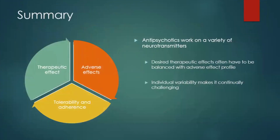To wrap up: this was our transition through the pharmacodynamics of antipsychotics. They work on a variety of neurotransmitters; our focus has been on dopamine and serotonin, but we're exploring the roles of other agents. We have a desired therapeutic effect that must be balanced against adverse effects, both acutely and chronically. Individual variability makes this continually challenging, but it's a great opportunity to continue engaging with your patient. They may tolerate a medication at first, but adverse effects may emerge later — making ongoing check-in and evaluation essential.